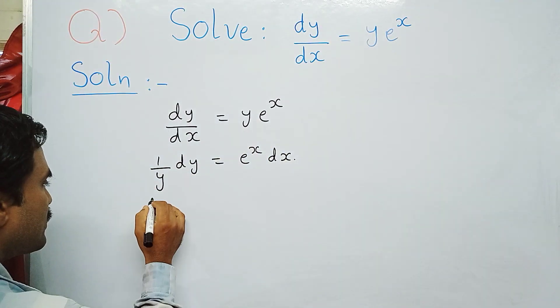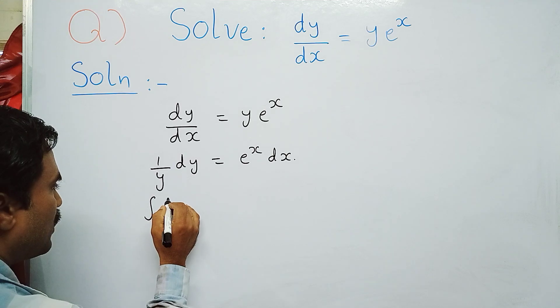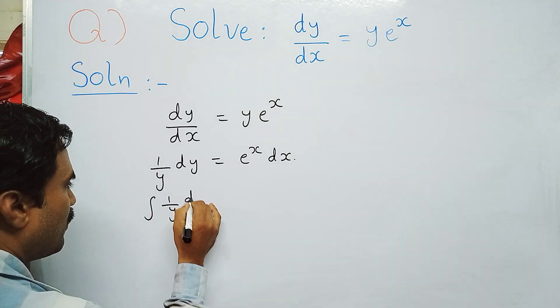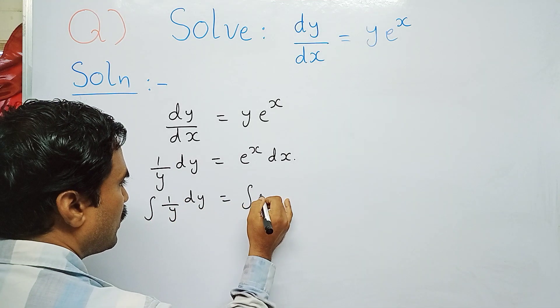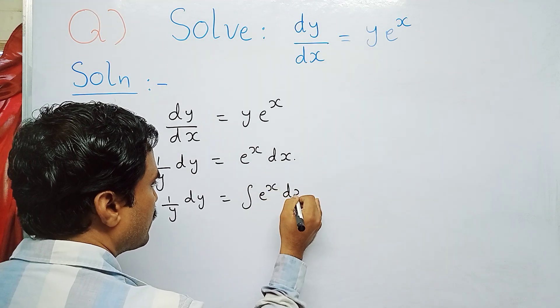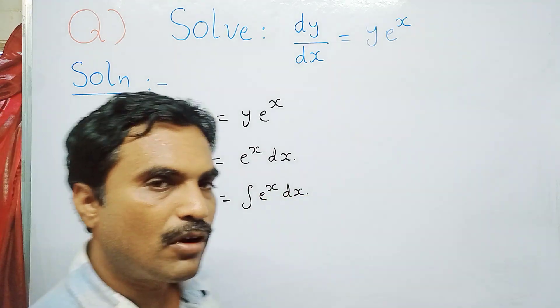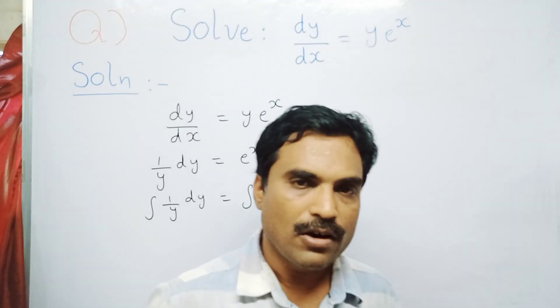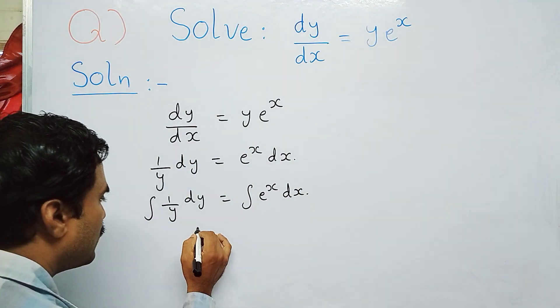Now we will directly integrate on both sides. Apply the integral symbol: ∫(1/y)dy = ∫e^x dx. The integration of 1/y dy is log y, so the left hand side is log y.